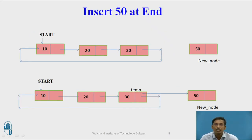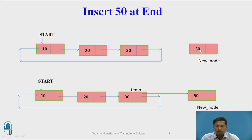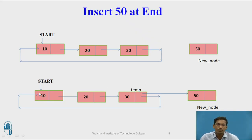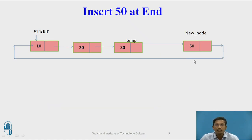Now suppose I want to insert 50 at the end. This is how the singly circular linked list looks previously. The first task is to allocate memory for the new node and store the value 50 in the data part. Next, traverse from the first node to the last node using a temporary variable temp. Once temp is pointing to the last node, set temp->next to the new node, and set new node->next to start.